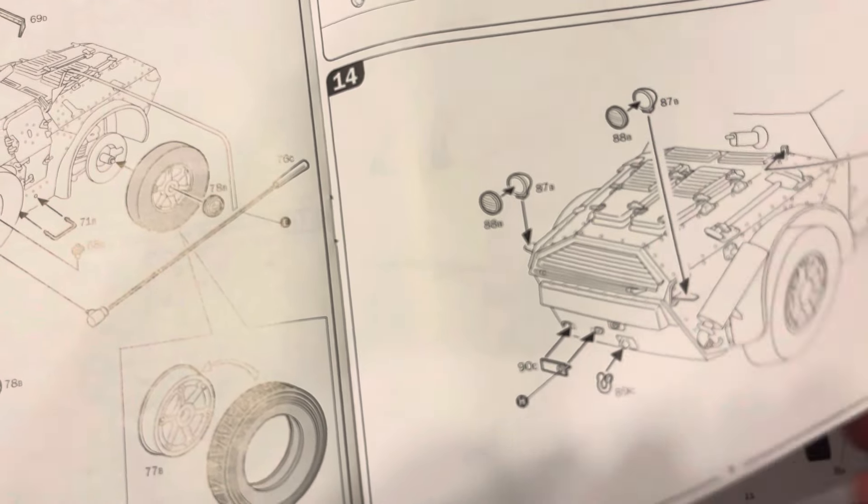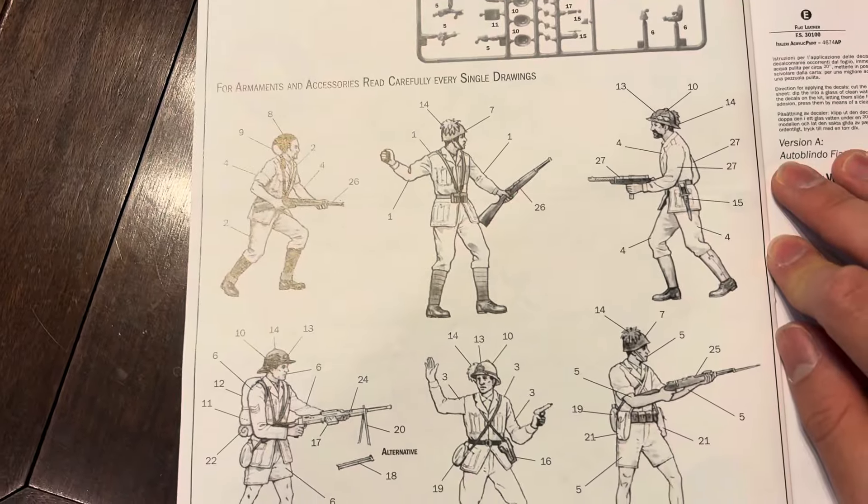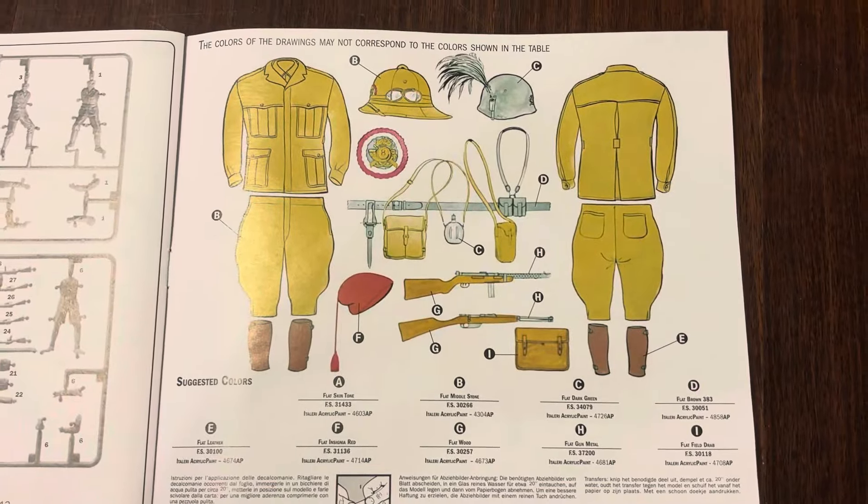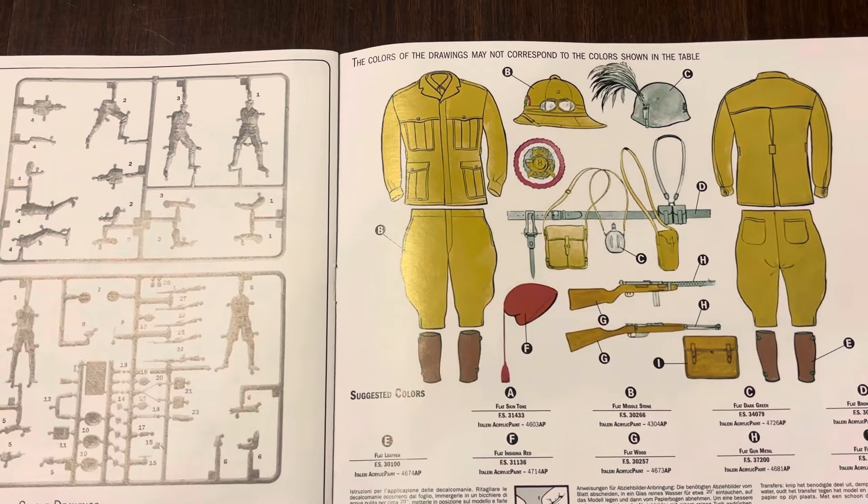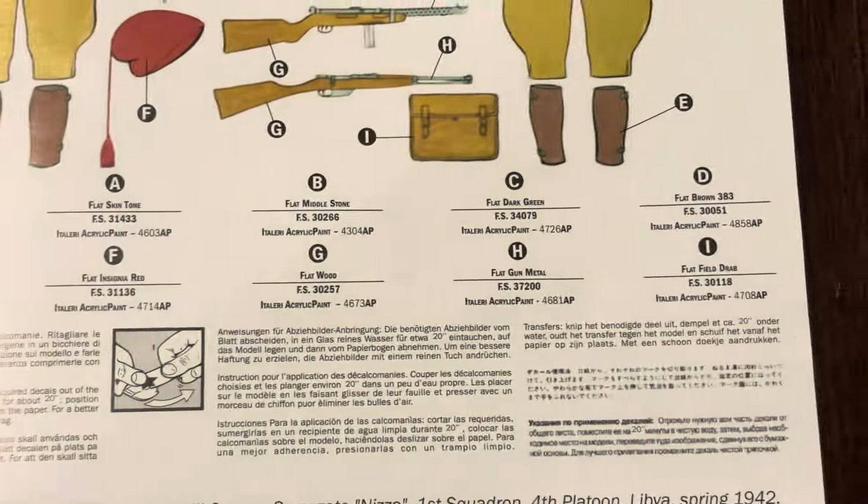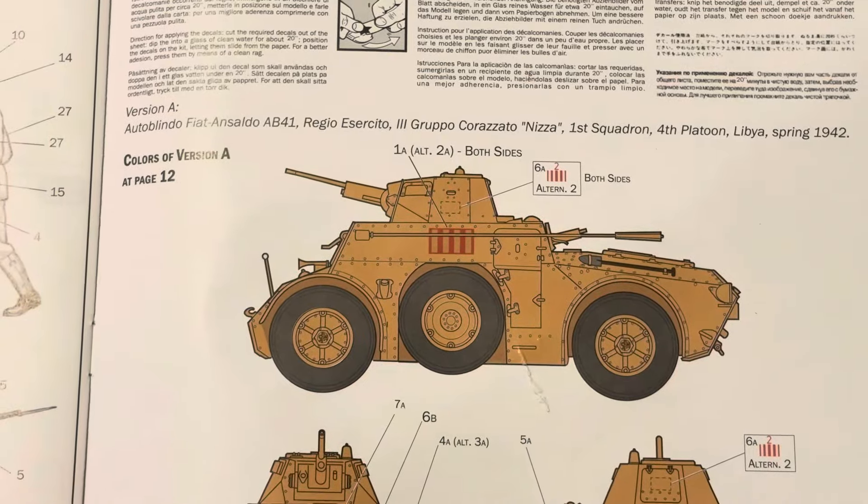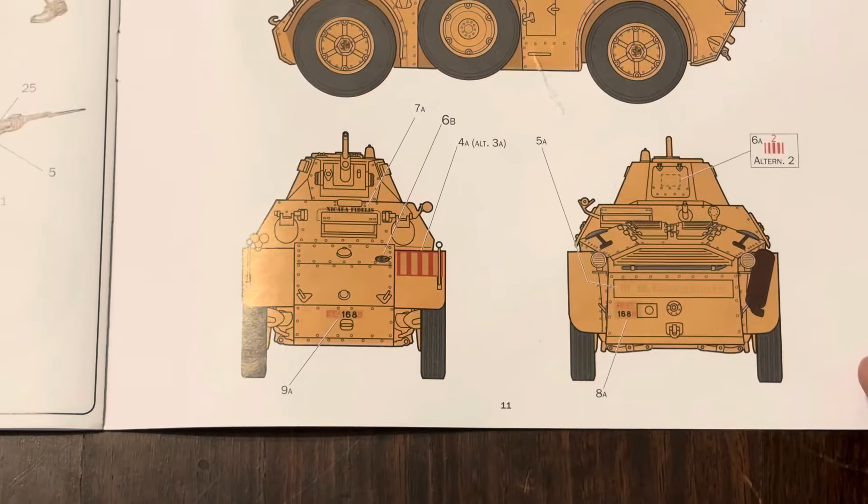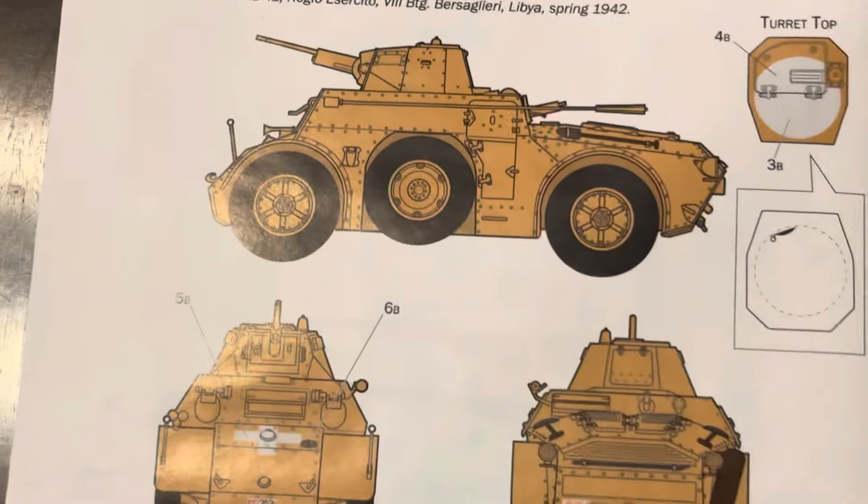Step fifteen is the figure tree with the people. Here are the uniforms, this is actually pretty interesting. Feel free to see if you can read those uniform details. This one is from 1942.